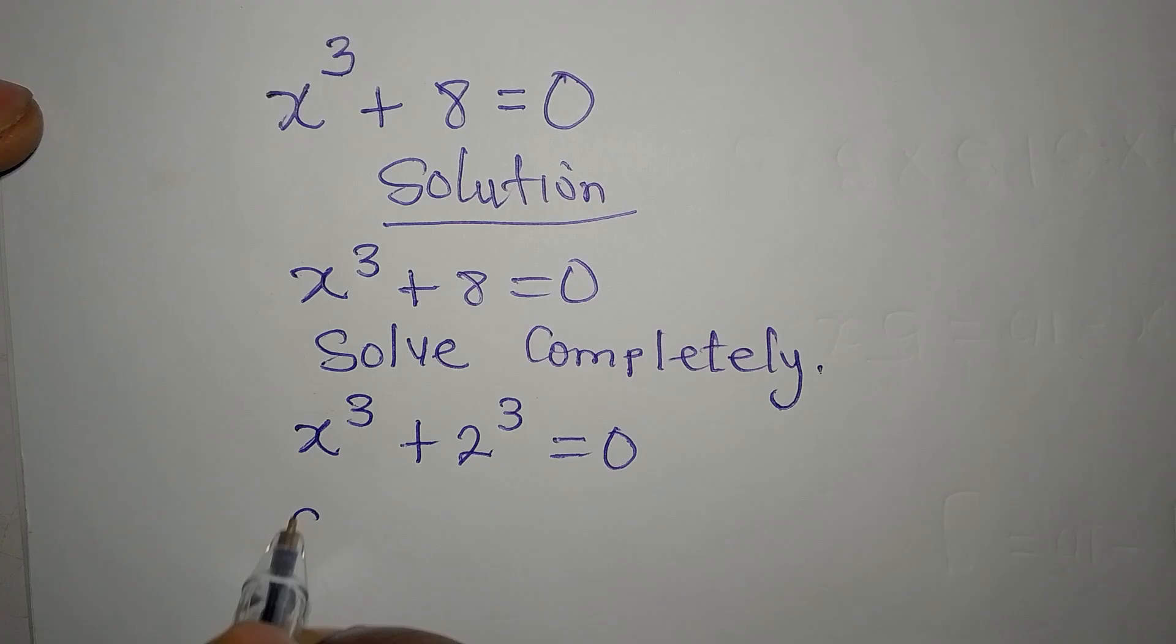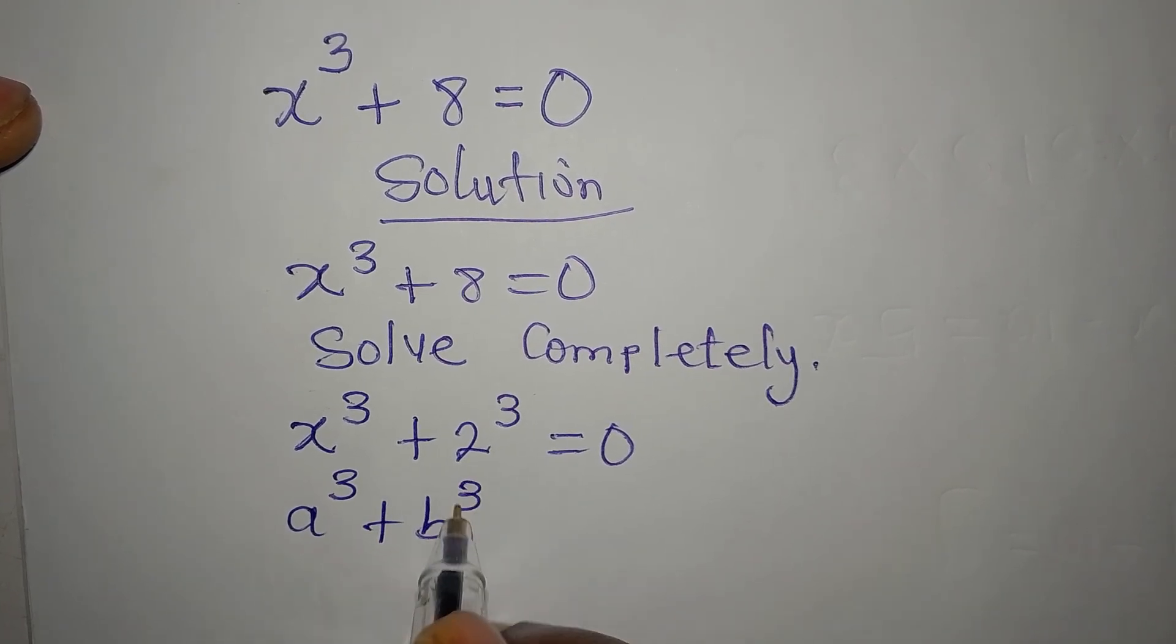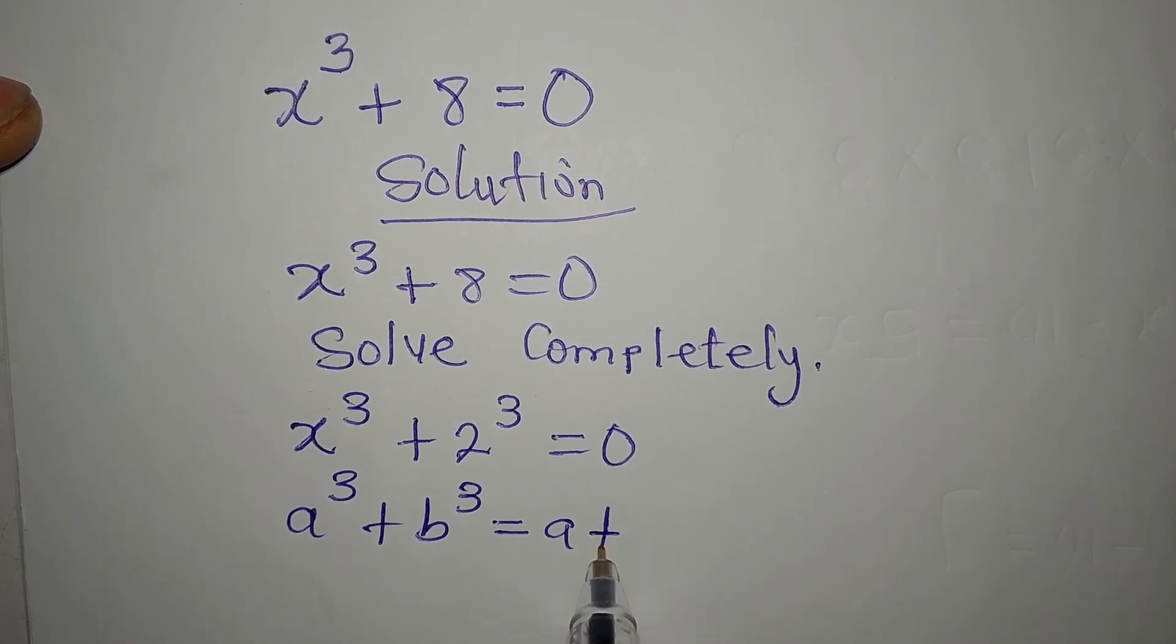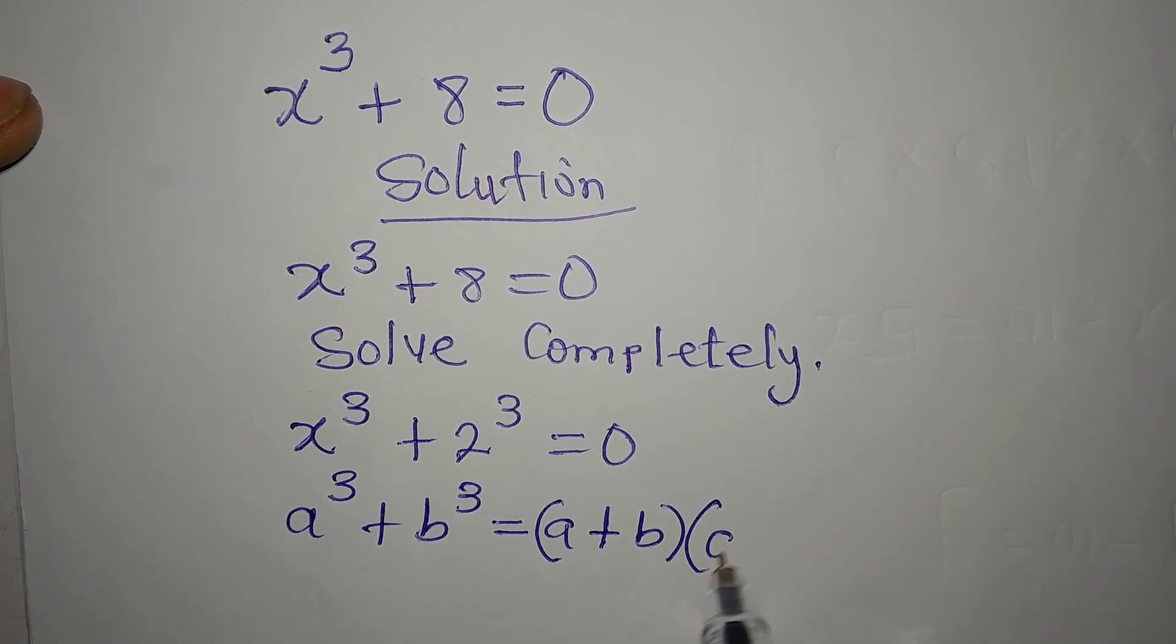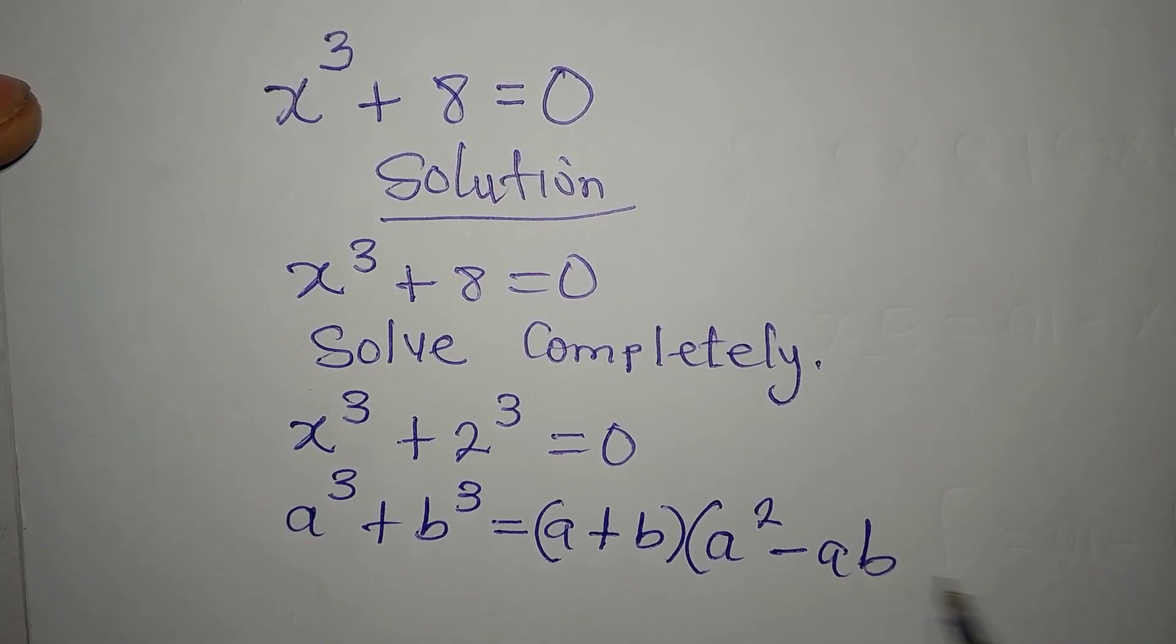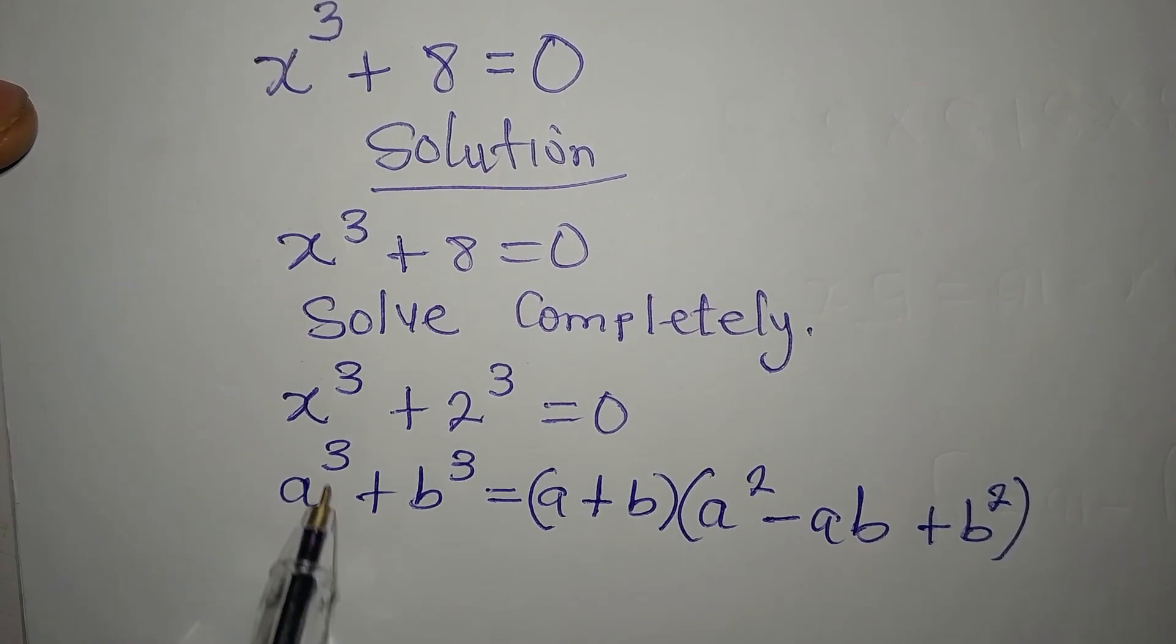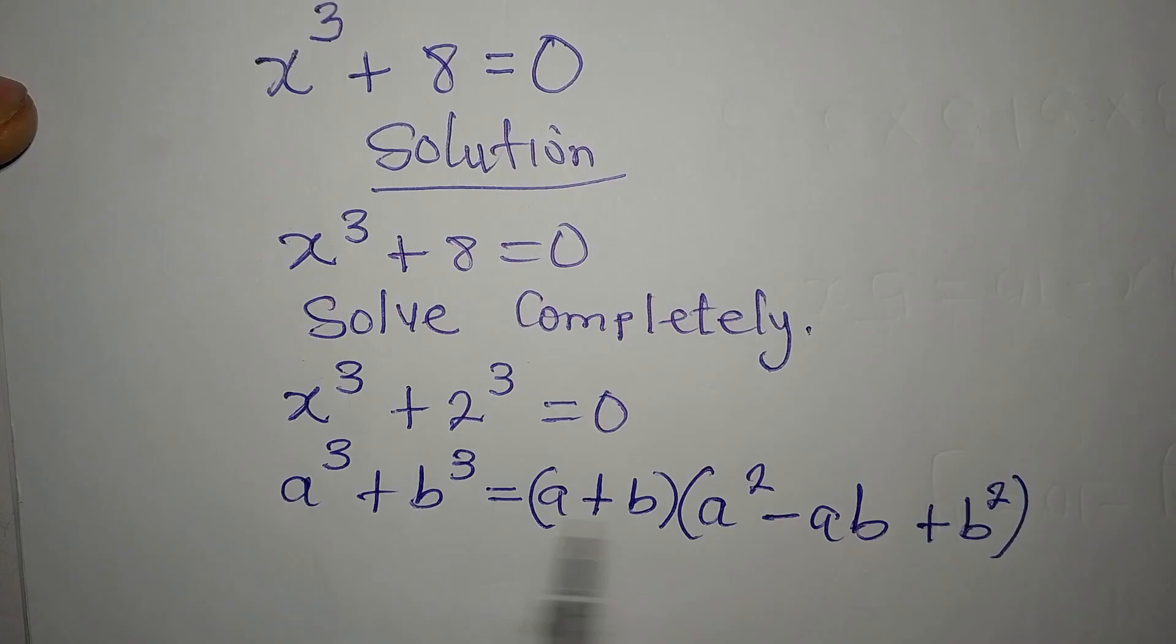And imagine that we have a cube plus b cube. What do you have? This is a. We have a plus b into a squared minus ab plus b squared. This is the identity. And if it is the difference of two cubes, you have your own, it will have its own identity.